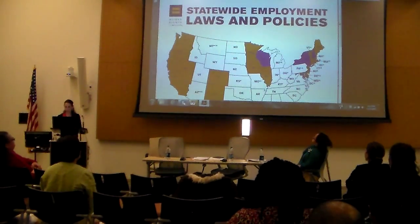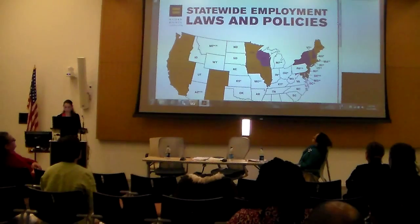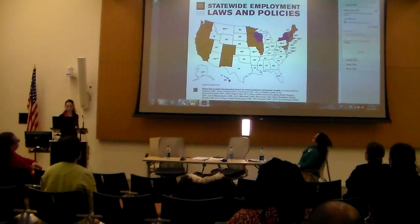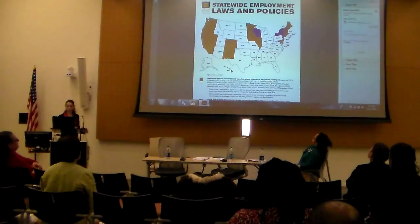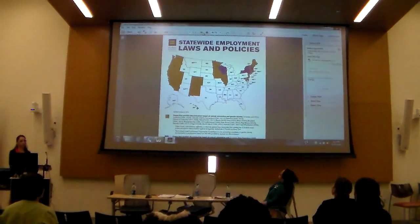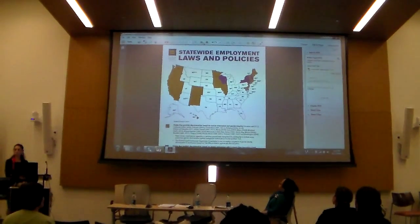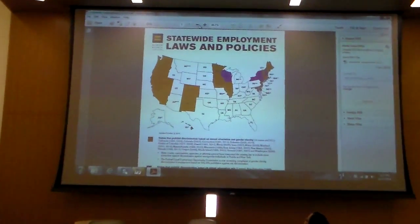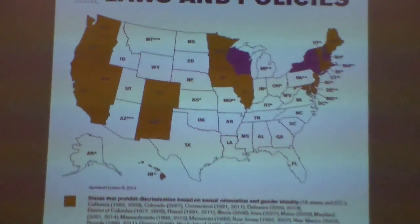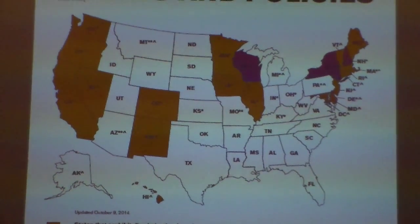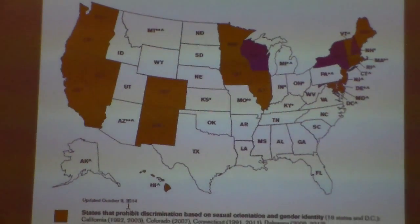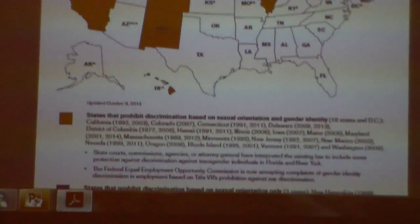This is from the Human Rights Campaign website, and it shows states' discrimination protections based on sexual orientation and gender identity. It's pretty up to date. Maryland is included, as I discussed. That map is available on their website, so definitely check it out.